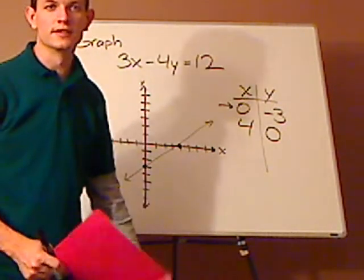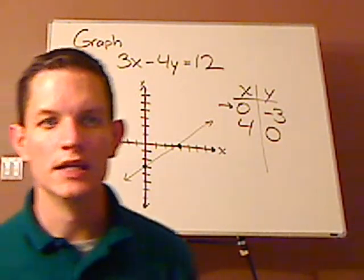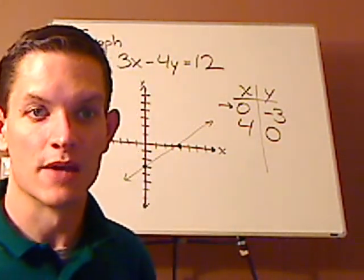So in this case, since it's in standard form, the easiest way to go about it is simply by finding the intercepts and using the table. And that's it.